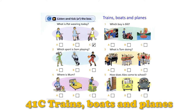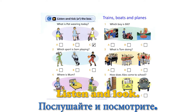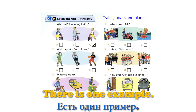41 C. Trains, Boats, and Planes. Look at the pictures. Listen and look. There is one example.